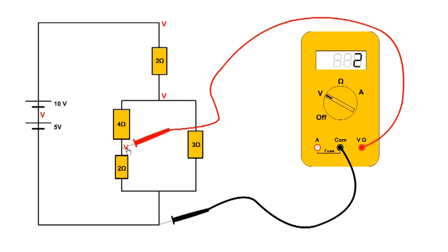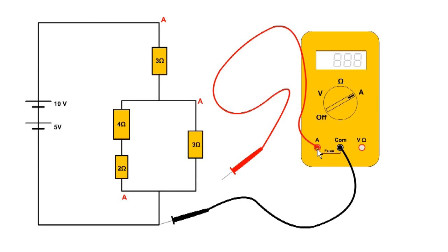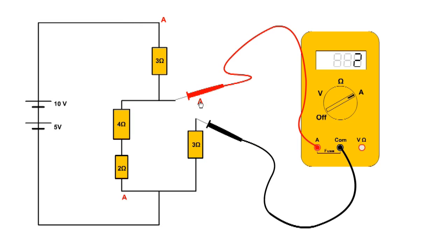To measure resistance, ohms is selected and the resistors are disconnected from the circuit. To measure current, one of the measuring leads must be changed to the current measuring port and amps is also selected. To measure current, we must break into the circuit and allow the current to flow through the multimeter. There is 3 amps at the top of the circuit, which divides into 2 amps and 1 amp.